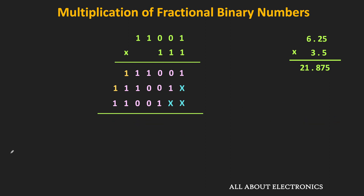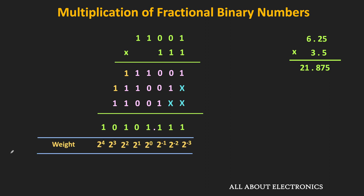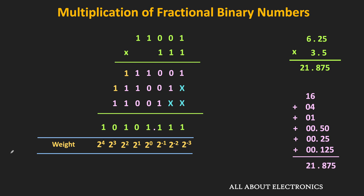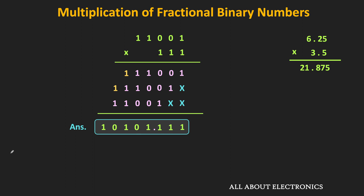Let us also verify our result by converting this binary number into the decimal equivalent. The decimal equivalent is: 16+4+1+0.5+0.25+0.125 = 21.875. That means this is the result after multiplication. So in this way, we can also multiply two fractional binary numbers.